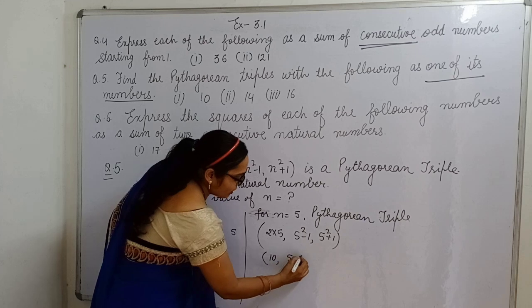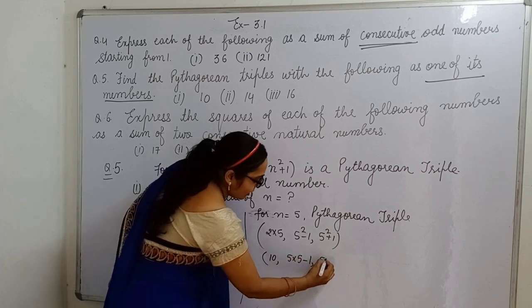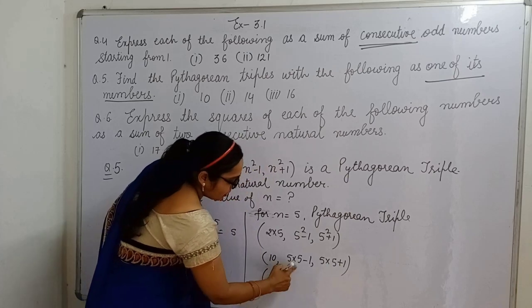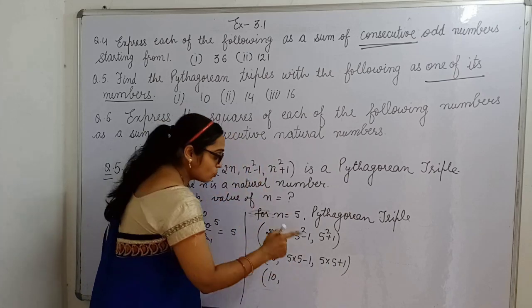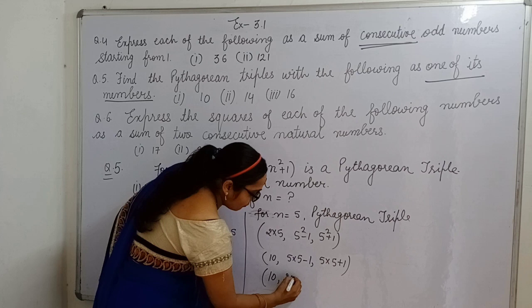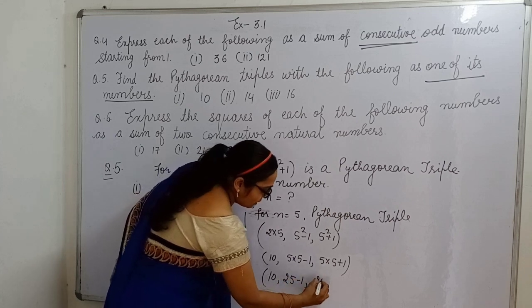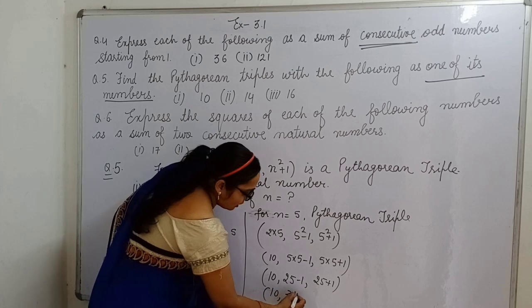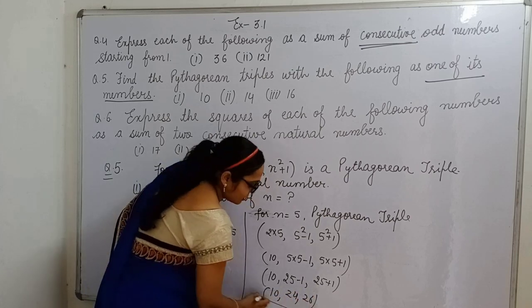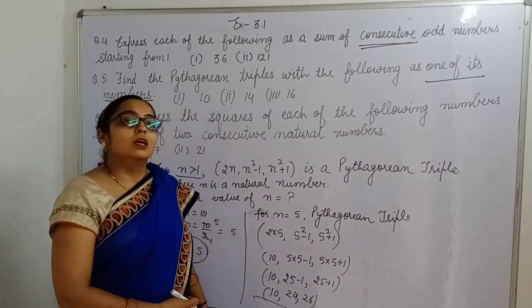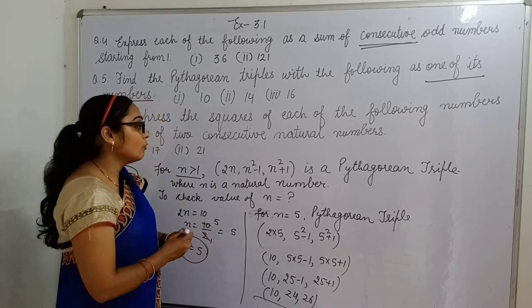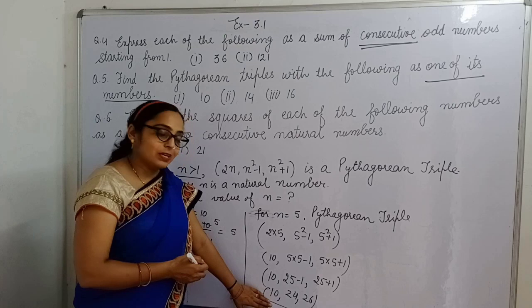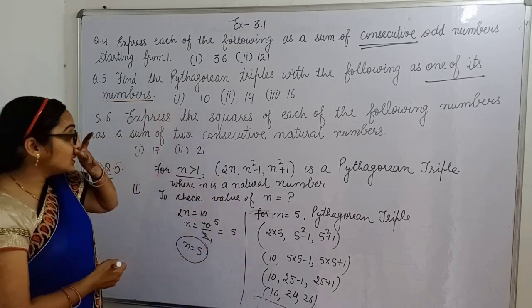10. According to BODMAS rule, first we have to multiply: 25 minus 1 and 25 plus 1. So it is 10, 24, and 26. This is the Pythagorean triplet for n is equal to 5. So we can get Pythagorean triplet is this.